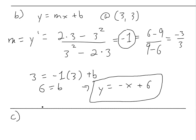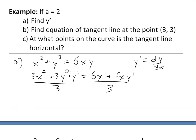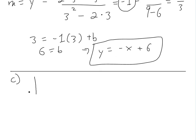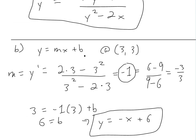So now if we look at part c, which asks at what points on the curve is the tangent line horizontal: we know that a horizontal slope means the derivative is going to be equal to 0. When the tangent line is horizontal, the slope is 0, or the derivative is 0. So we just set y prime equal to 0 in our derivative expression.